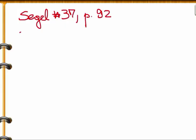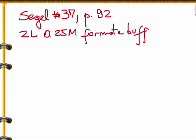Let's solve problem 37 on page 92 of Seagull's Biochemical Calculations. Describe the preparation of 2 liters of 0.25 molar formate buffer at pH 4.5, starting from 1 molar formic acid and solid sodium formate. The pKa of formic acid is given.